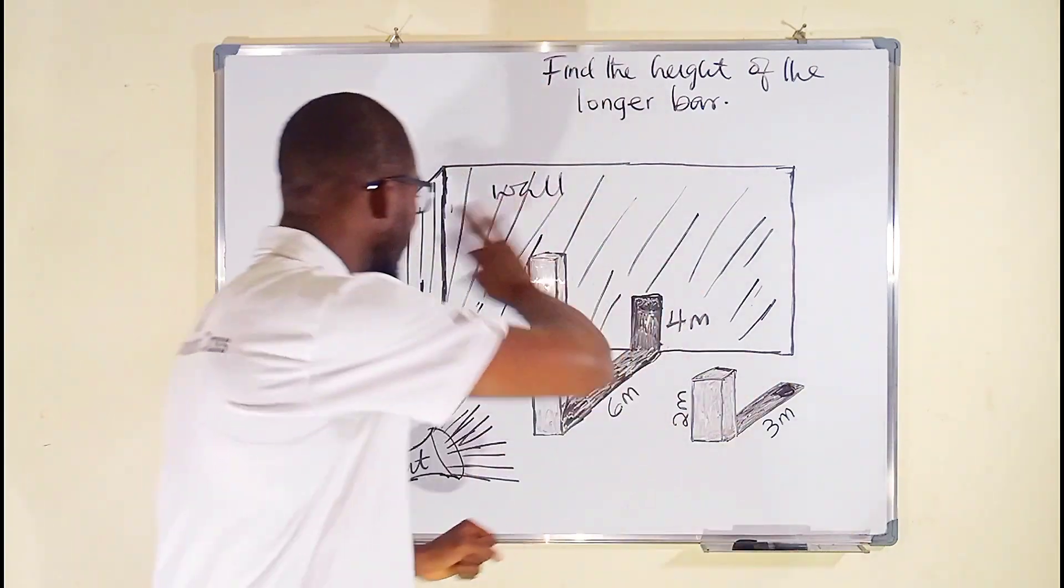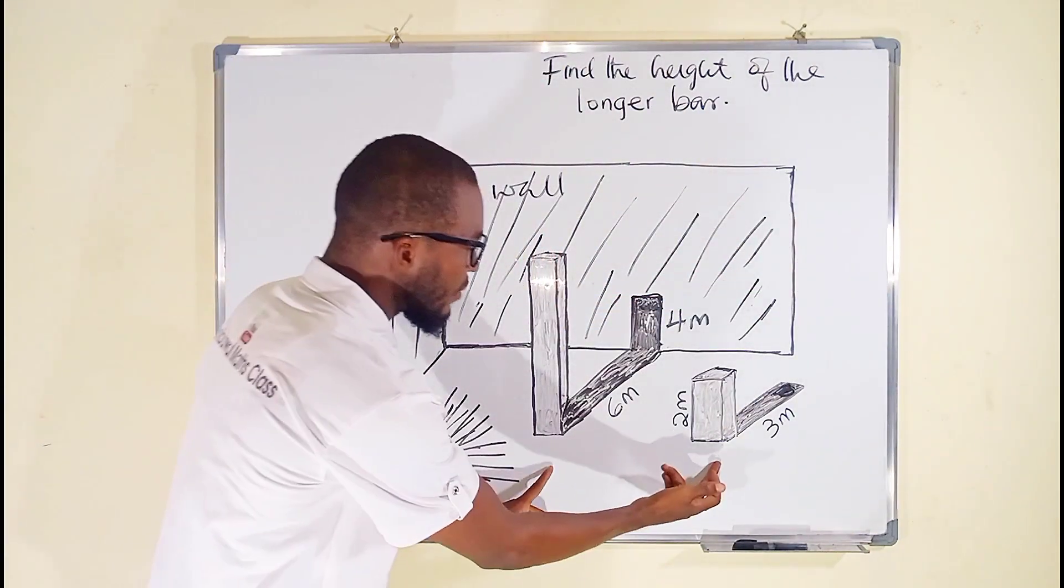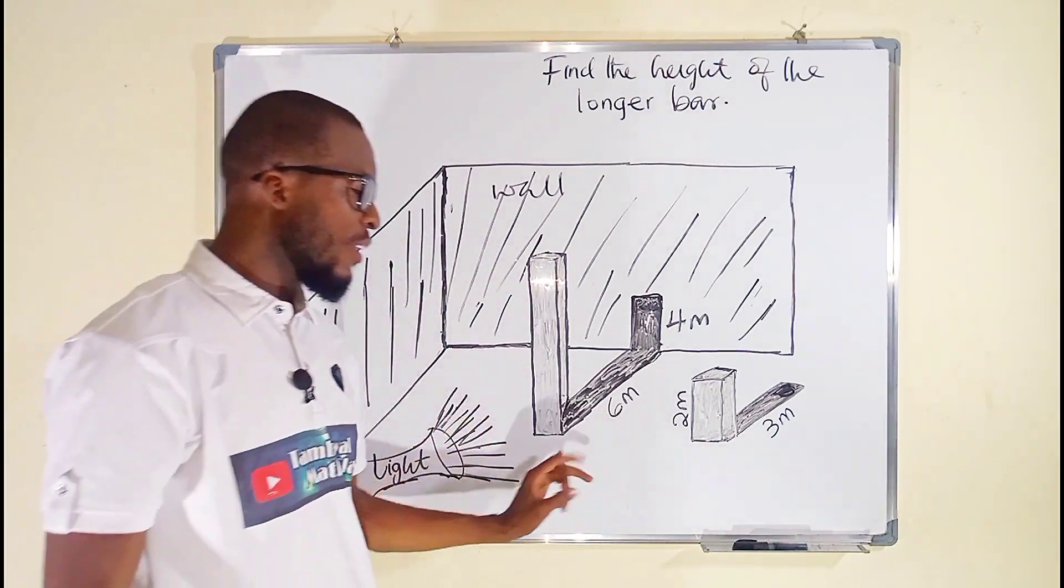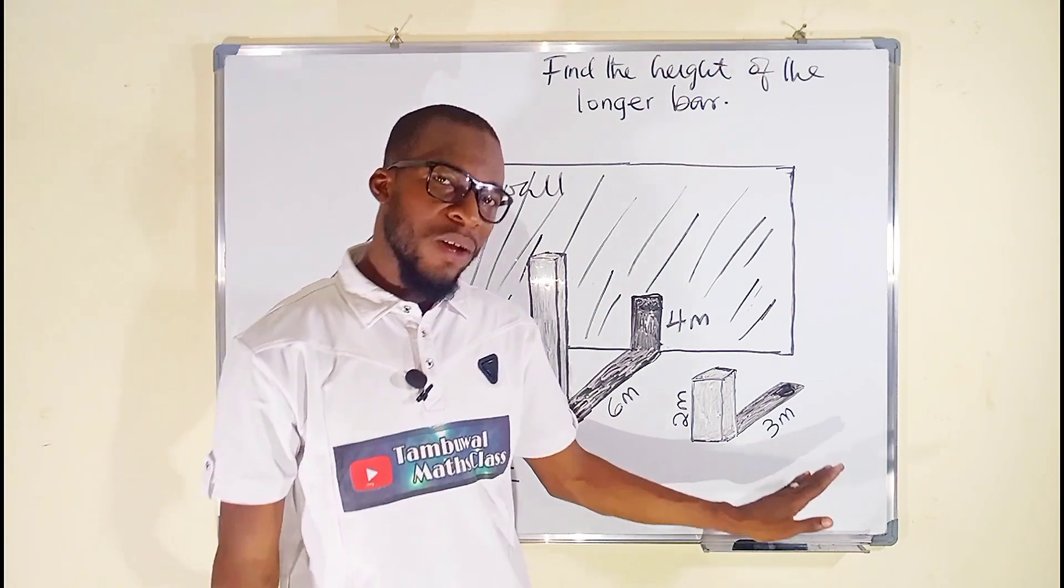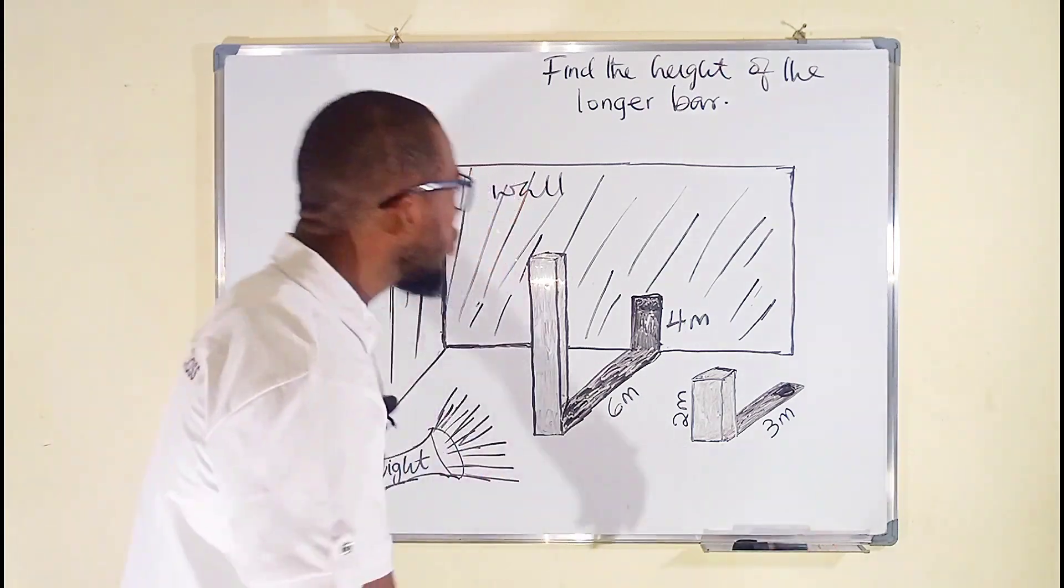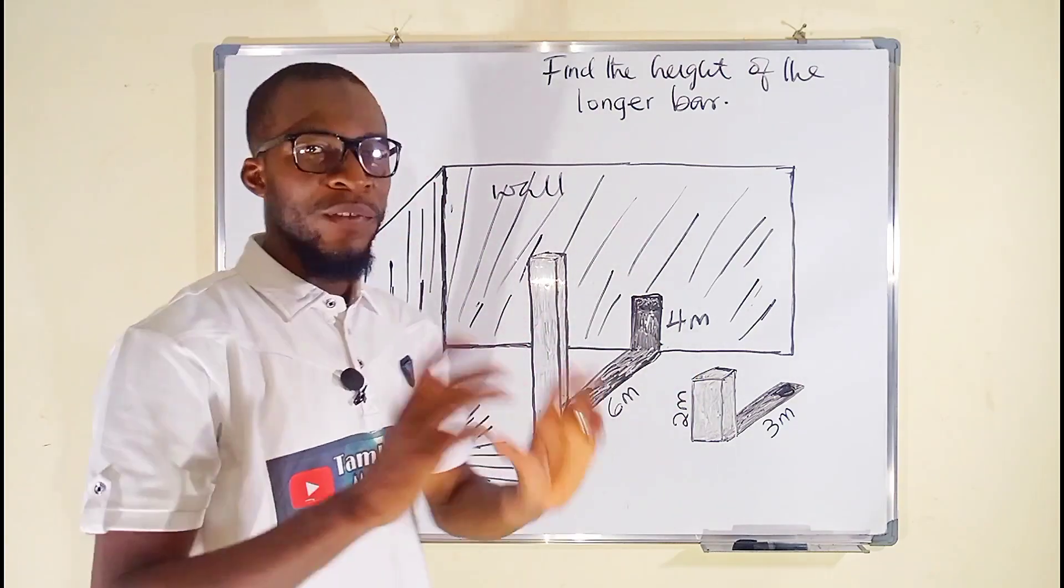What you are seeing here at the back is a vertical wall. We have two bars. One is shorter than the other. This one is shorter than this. They are all from the same horizontal ground and they are said to be parallel to the wall. This means that both are standing vertically.